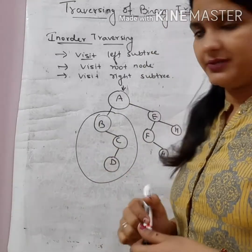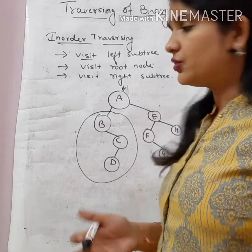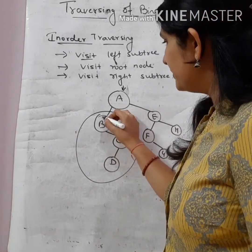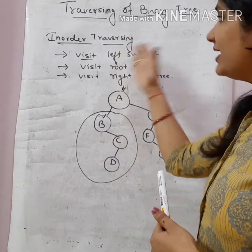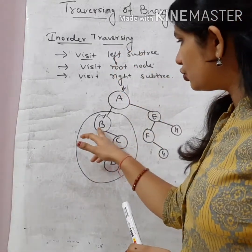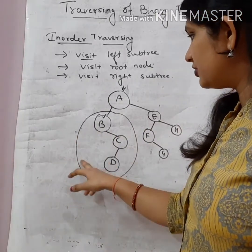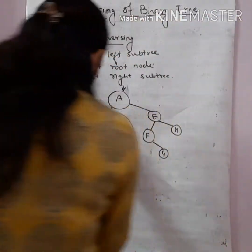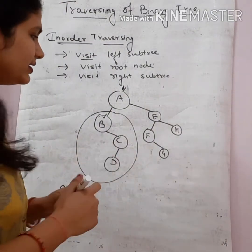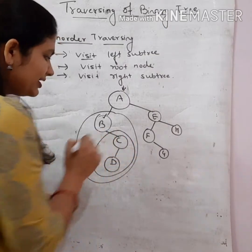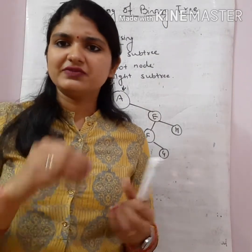From the root node we go to the left subtree. Now if this left subtree has a root node, left subtree, or right subtree, then this left subtree node becomes our root node. We check: is there a left subtree? If there is no left subtree, then we visit the root node first.